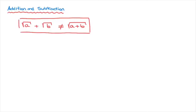To illustrate this, let's say we had to calculate the square root of four plus the square root of nine. We know that the square root of four is equal to two, and the square root of nine is equal to three. So two plus three equals five, meaning this whole sum is equal to five.